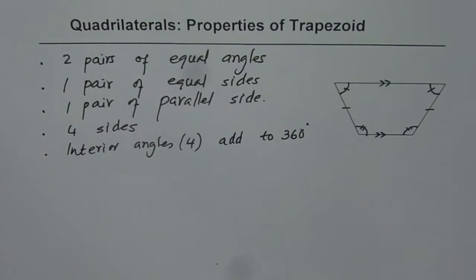So these two properties are common to all quadrilaterals, and the first three are very special properties for a trapezoid.